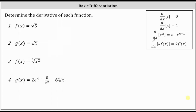We're asked to find the derivative of each function. Number one, we have f of x equals the square root of five. Well, the square root of five is just some irrational constant, and the derivative of any constant with respect to x is equal to zero, which indicates f prime of x is equal to zero when f of x equals the square root of five.